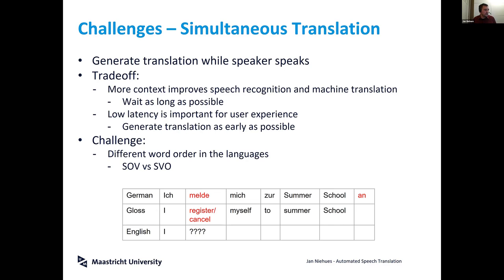This is especially challenging when languages have different word orders. In German and English the word order can be very different. For example, a German sentence meaning 'I register myself to the summer school — however only registering, not withdrawing my registration' — that distinction depends only on the last word: 'an' versus 'ab.'